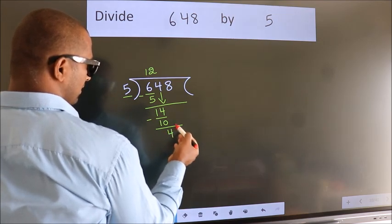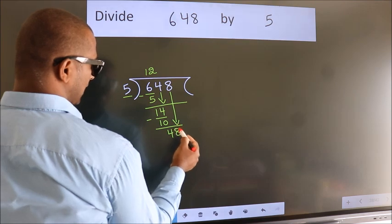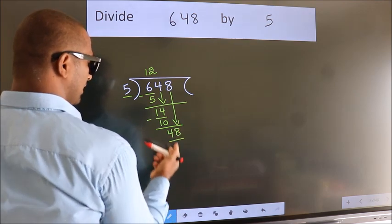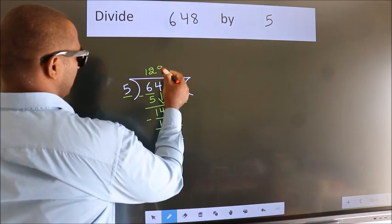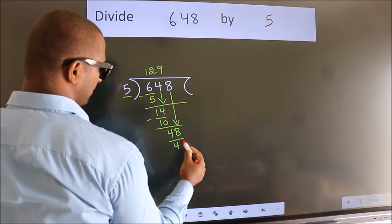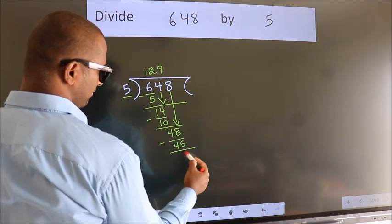After this, bring down the beside number. So 8 down. So 48. A number close to 48 in 5 table is 5 nines 45. Now we subtract. We get 3.